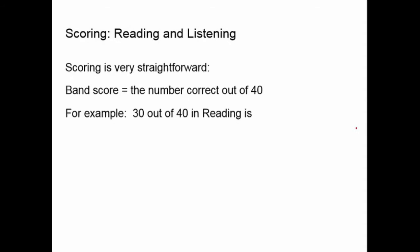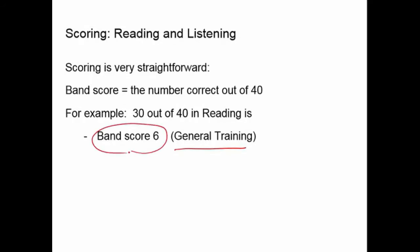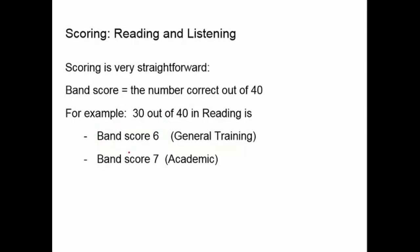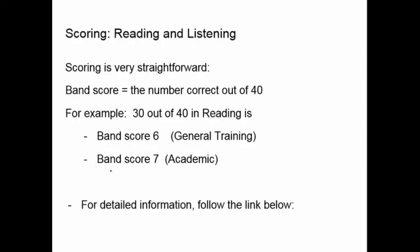For example, if you get 30 out of 40 correct in reading on the general training exam, you'll get a band score of 6. For the academic reading section, getting 30 out of 40 means you get a band score of 7. They're different exams and each has its own grading criteria. You can see the tables for academic and general training reading scores and listening scores by following the links below.